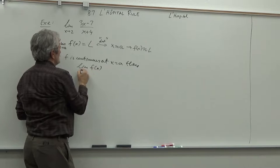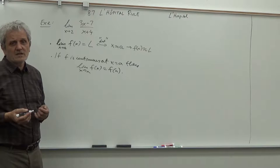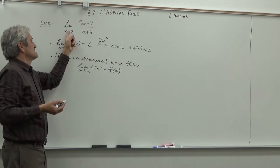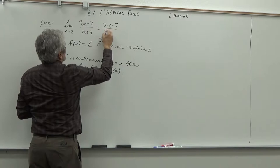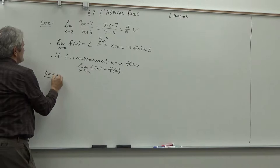We are considering all values very close to a, and if there is a trend we say that's the limit. If f is continuous at x = a, then the limit of f(x) as x approaches a is exactly f(a). That's why very often we just get limits by plugging in the value. This function is continuous at x = 2 because it's a quotient of two polynomials, which is always continuous except where the denominator is zero — which is not the case here. So I just plug in: (3·2 − 7)/(2 + 4) = −1/6.